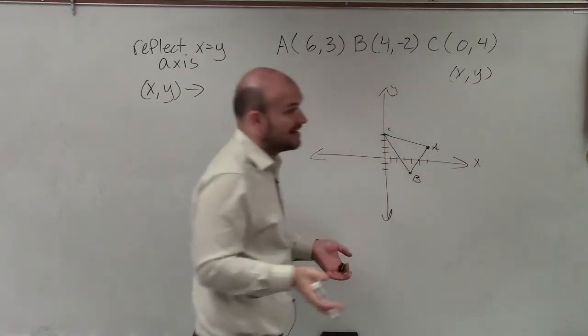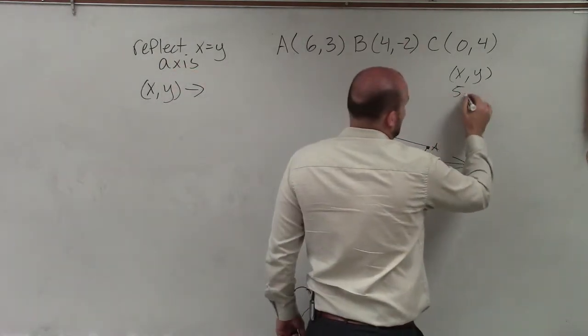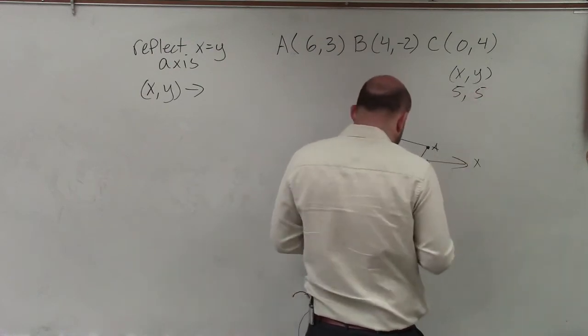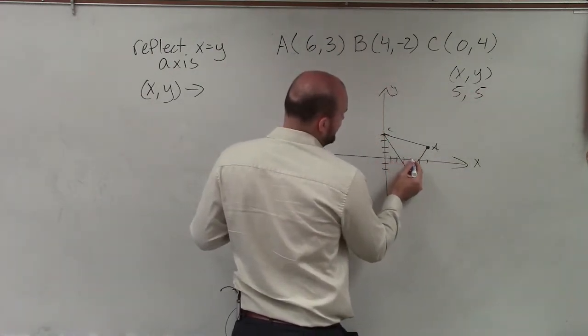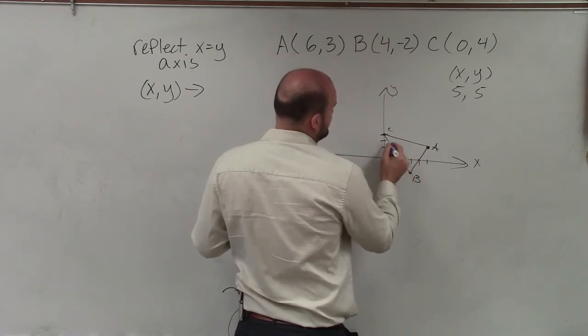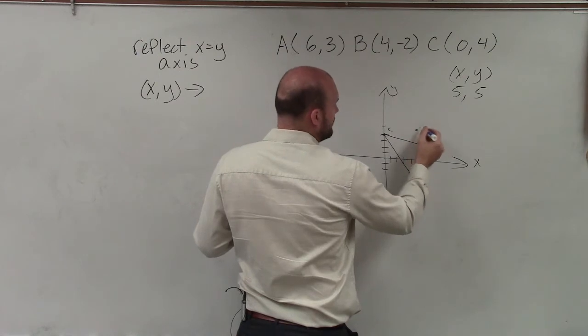So if x equals 5, that means y equals 5. So let's plot that point and see what that would be. So at 5 over and up 5. So that would be right there.